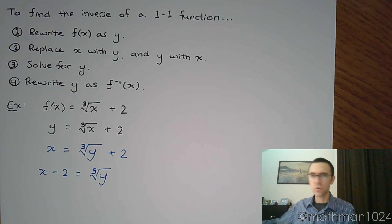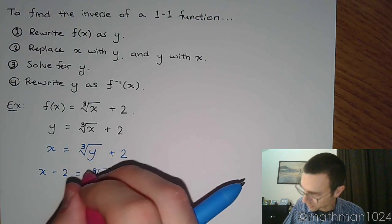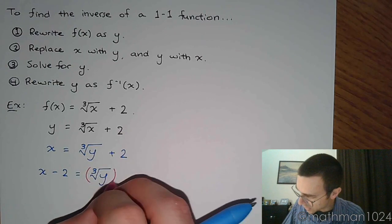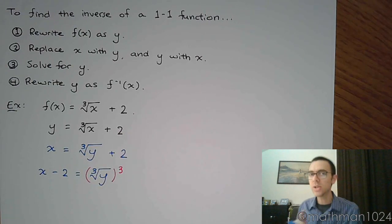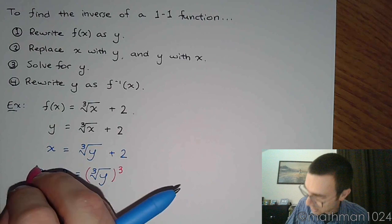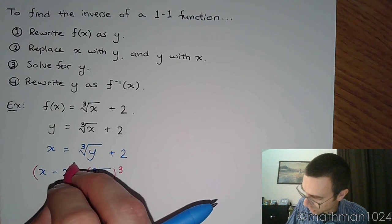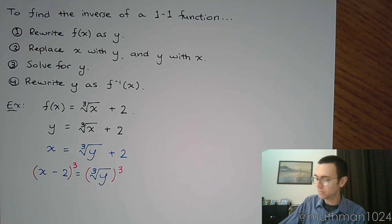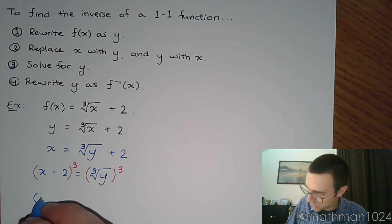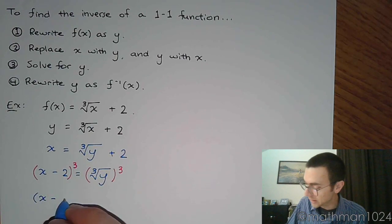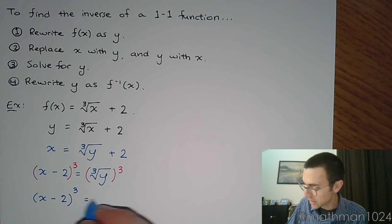Alright, so x minus 2 equals the cube root of y. To undo the cube root, we want to raise both sides to the third power. Now understand you're raising both sides. So this whole group needs to be raised to the third power. Do not expand this. Leave it as it is. x minus 2 to the third power is equal to y.